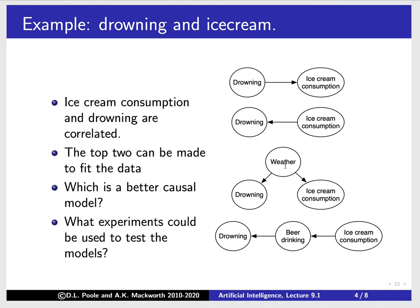We could say maybe it's because of the weather — if it's hot, there's more drowning; if it's hot, there's more ice cream consumption. Arguably this is a good causal model. Here's another causal model: ice cream consumption causes beer drinking, which causes drowning. We know that drinking alcohol has a strong causal effect on drowning, and maybe ice cream consumption increases beer drinking. It turns out we can actually test these bottom two models — you cannot test the top two. We can test the bottom two by looking at the independence assumptions.